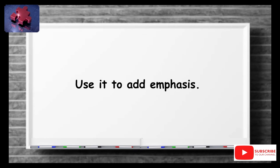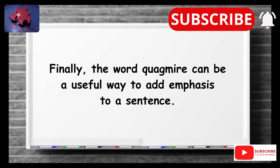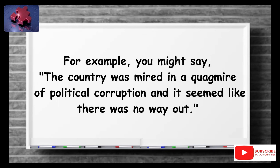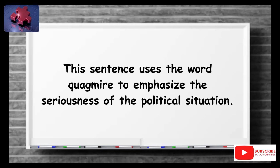Use it to add emphasis. Finally, the word quagmire can be a useful way to add emphasis to a sentence. When used correctly, it can help convey the seriousness of a situation and the difficulty of finding a solution. For example: "The country was mired in a quagmire of political corruption and it seemed like there was no way out." This uses quagmire to emphasize the seriousness of the political situation.